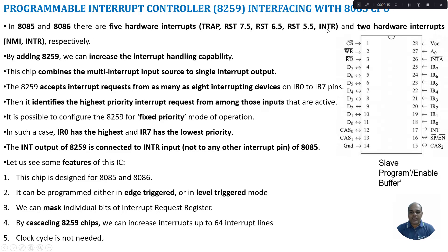Interrupts can be generated by a peripheral device. When an interrupt is generated, the CPU needs to execute the service routine for that particular interrupt. In 8085, 5 interrupts are supported. Out of these 5, TRAP is a non-maskable interrupt. RST 7.5, 6.5, 5.5, and INTR are maskable interrupts, which can be stopped without interfering with the CPU.